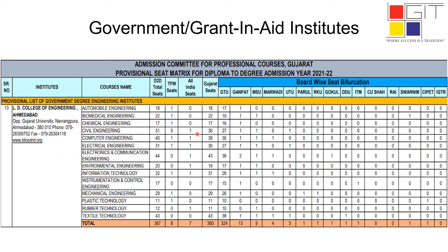In this institute there are a total of 18 D2D seats for the Automobile Engineering branch. From that, one seat is a TFW seat and there are zero seats for students from outside Gujarat. After that you can see the board-wise seat bifurcation: out of these 18 total seats, 17 seats are for GTU students, one seat is for a student who completed their diploma from Ganpat University board, and zero seats are for other boards.